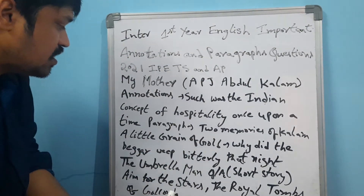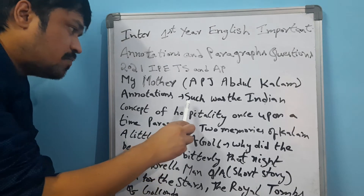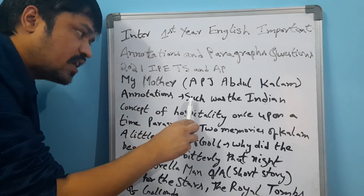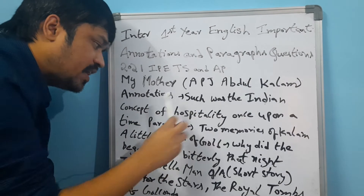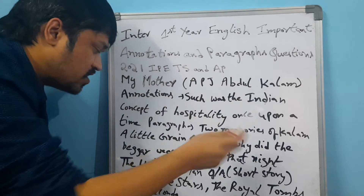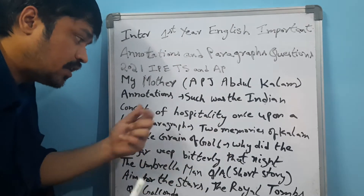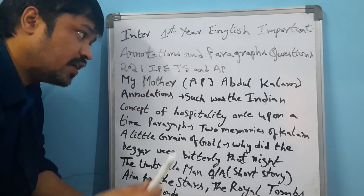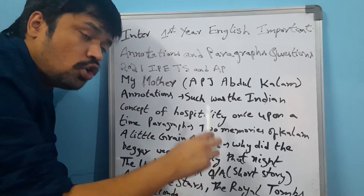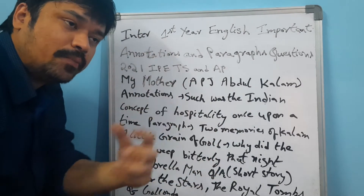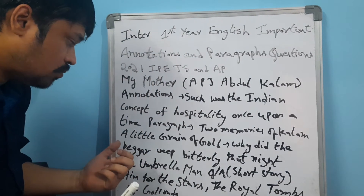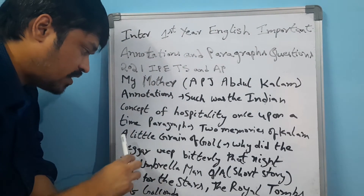To recap, the most important annotation is: 'Such was the Indian concept of hospitality once upon a time.' And the paragraph question regarding APJ Abdul Kalam is: narrate the two memories of Kalam — which is one of the most important paragraph questions.